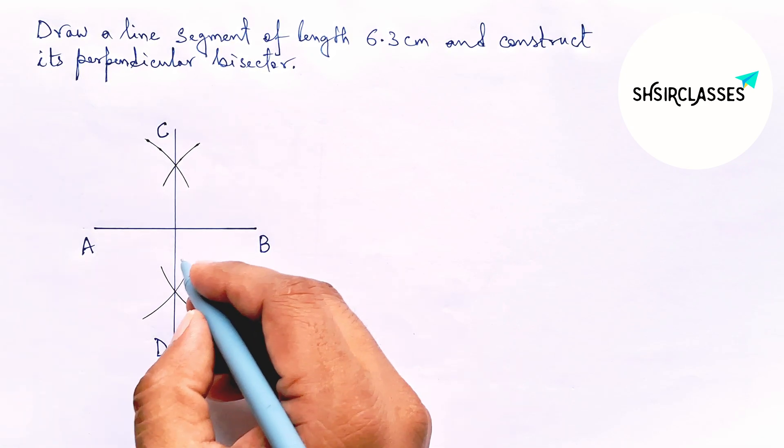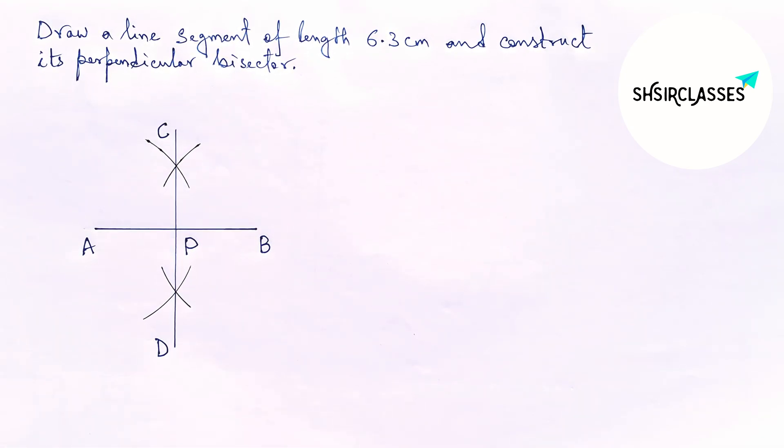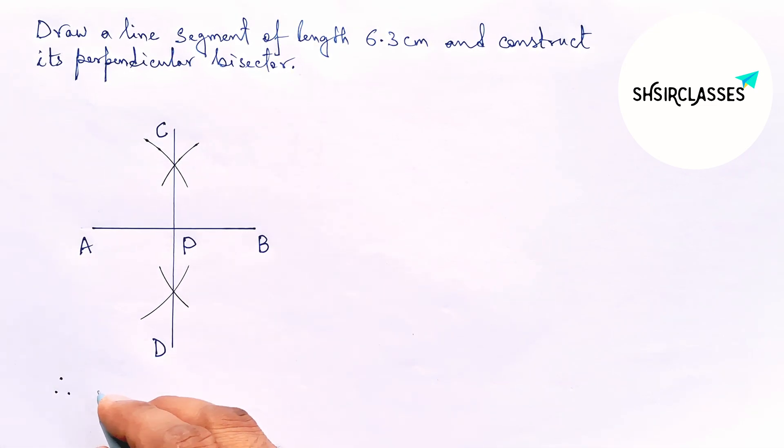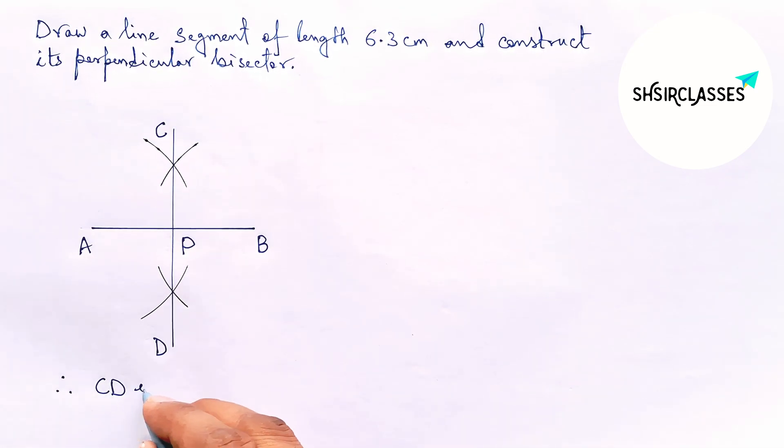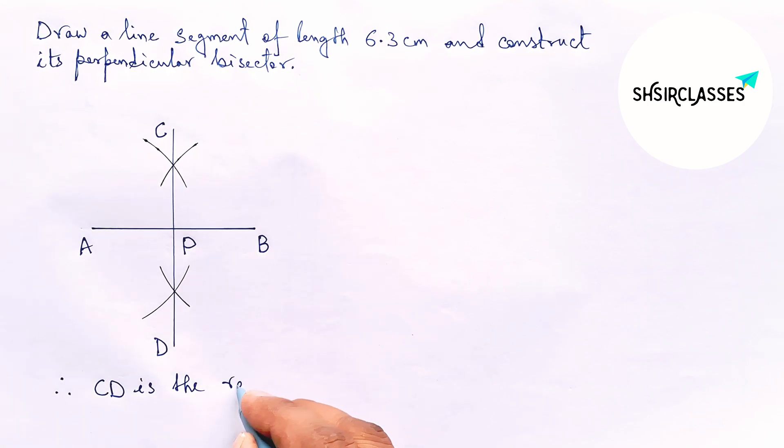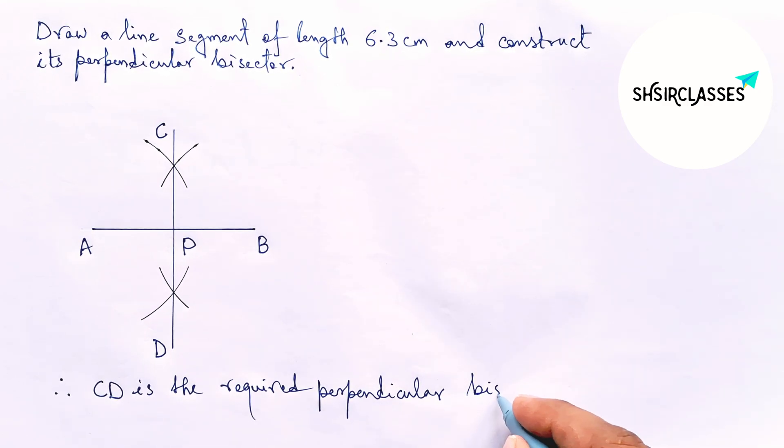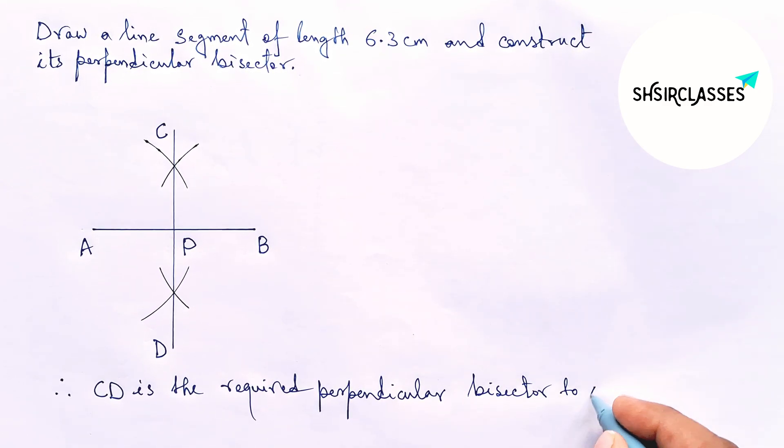AB and CD both meet at a point, label it point P. Therefore, CD is the required perpendicular bisector to the line AB. By this way, you can construct a perpendicular bisector to a given line.